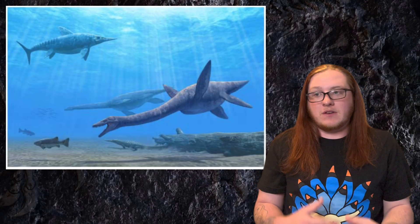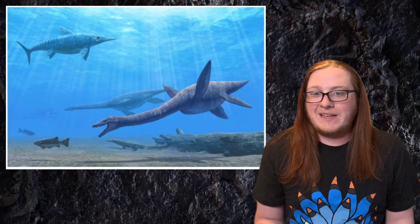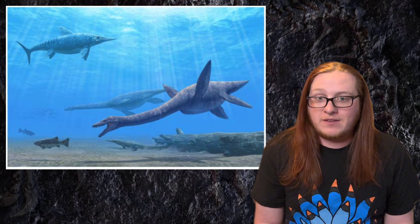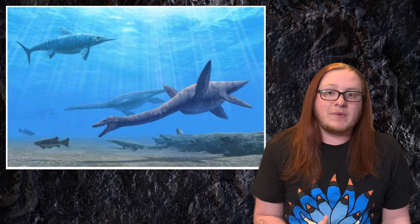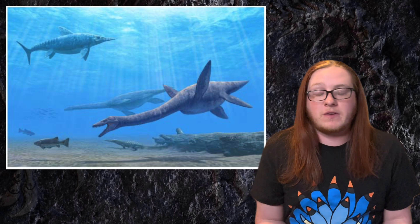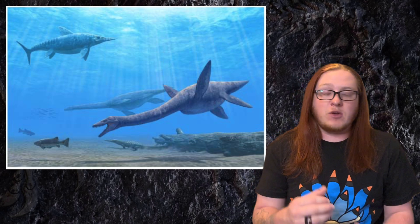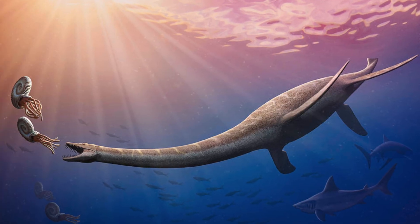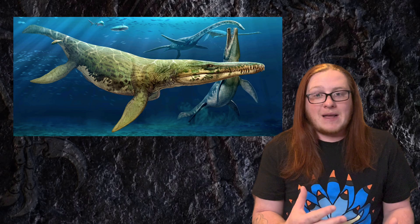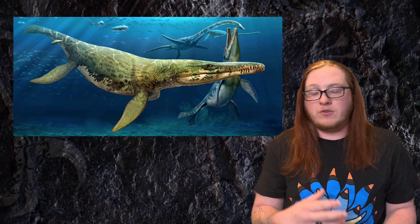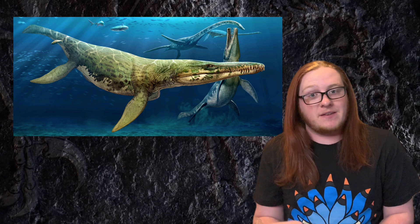This group of reptiles dominated the Triassic seas, but they ended up being replaced in the Jurassic period by the plesiosaurs and the pliosaurs — a group of reptiles that relied on their four flippers and evolved a couple different methods of hunting. One evolved really long necks to hunt fish, and the others, the pliosaurs, evolved really big heads with powerful jaws to hunt the plesiosaurs.